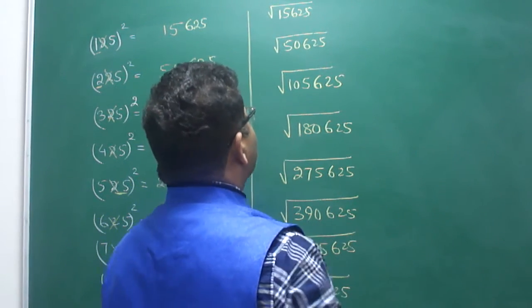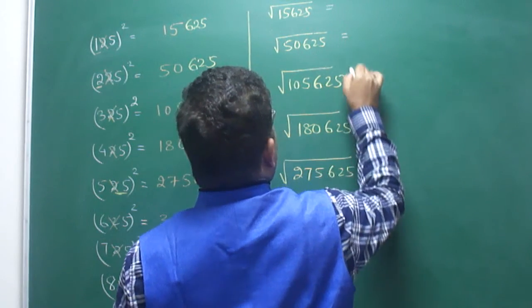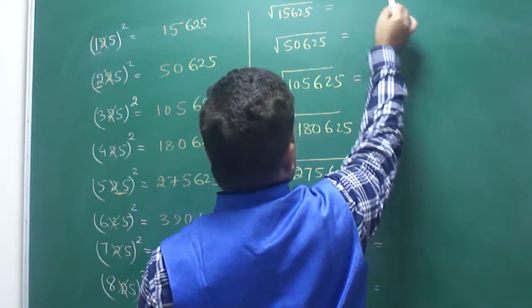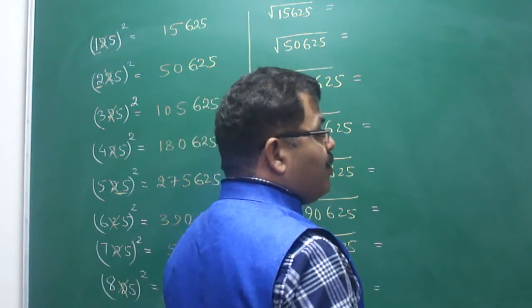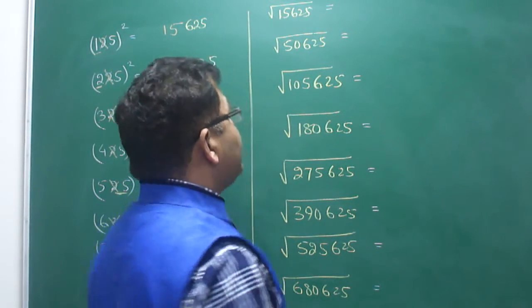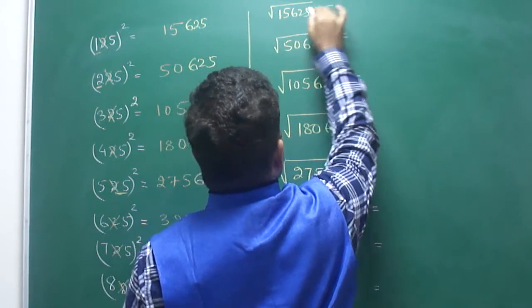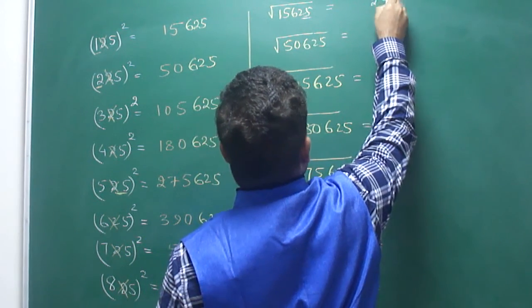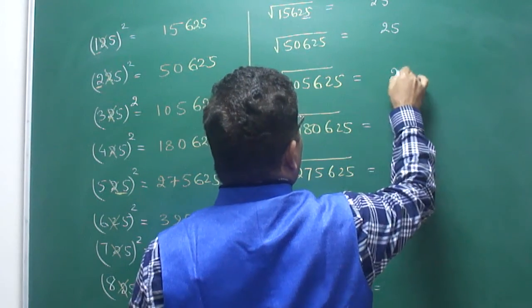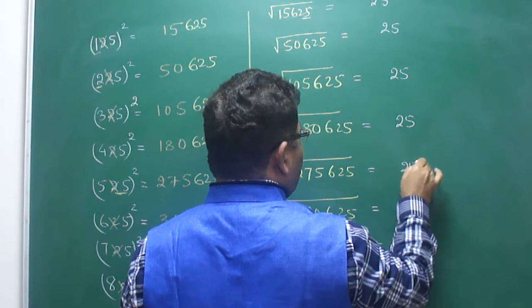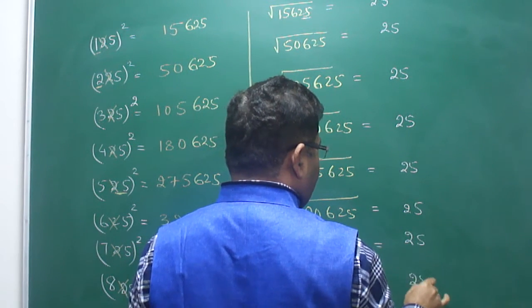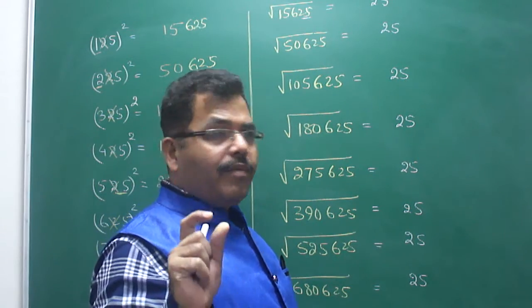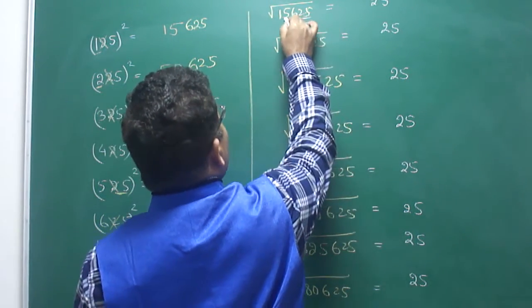To find the square root: if the last three digits of the number are 625, then the last two digits of the answer will certainly be 25 — but this is applicable for perfect squares only. So 25 will come as the last two digits of the square root in all these cases.